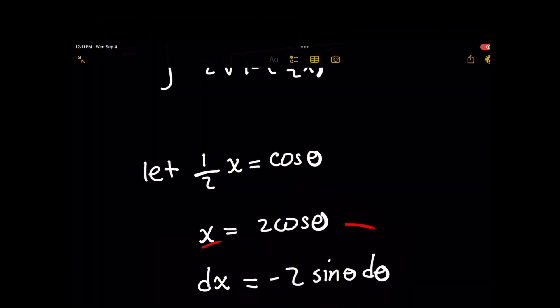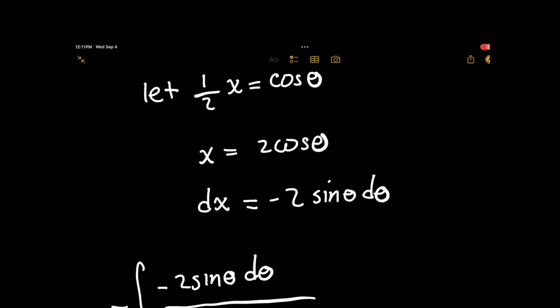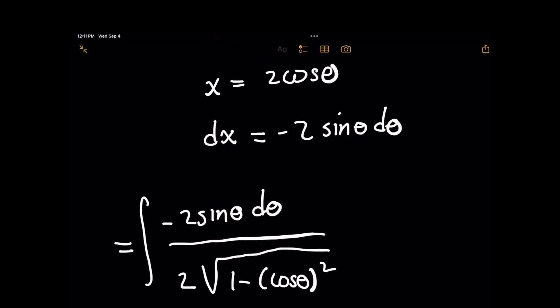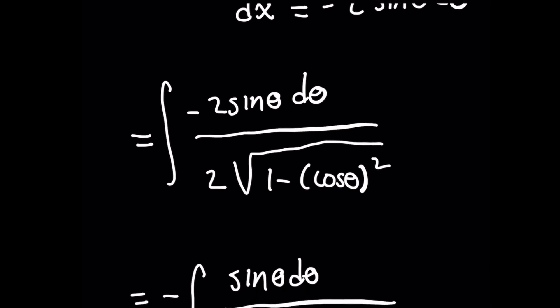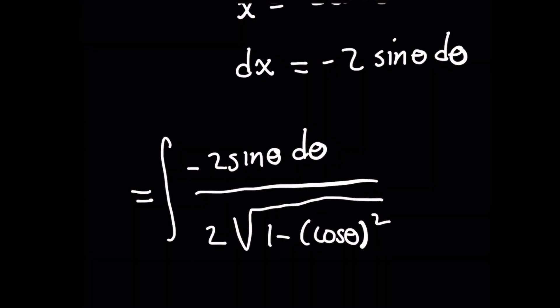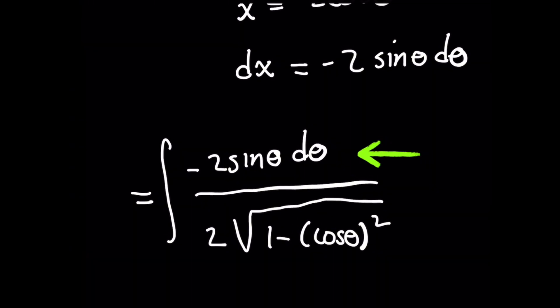sides, notice how on the left-hand side dx is by itself—you don't have a variable x in front of it like how we got stuck originally. This means you can now safely substitute it into the original integral. When we rewrite it, on the numerator instead of dx it's substituted with -2sin θ dθ, and for the denominator that (1/2)x part under the radical will now be cos θ due to our u-substitution. The reason why this is useful is because with the trig identity